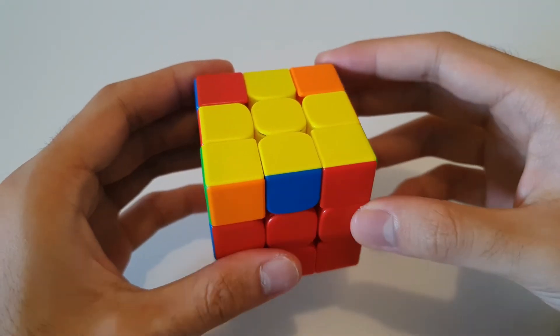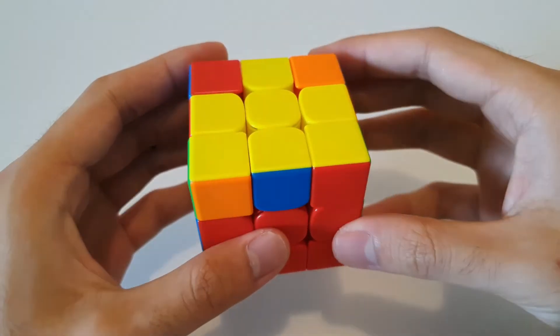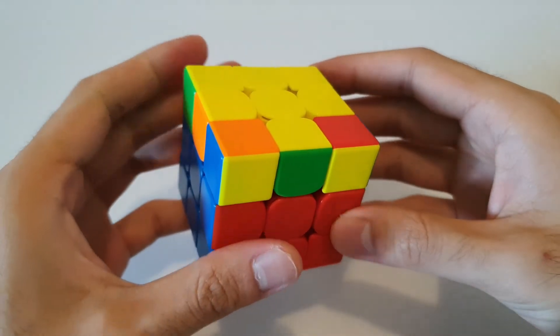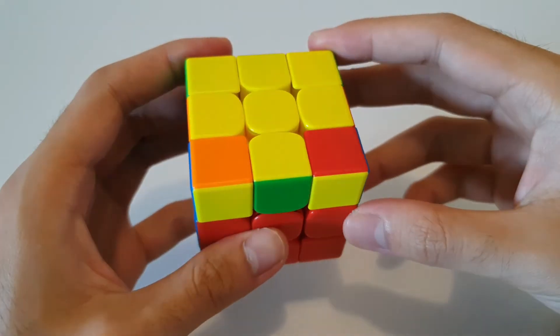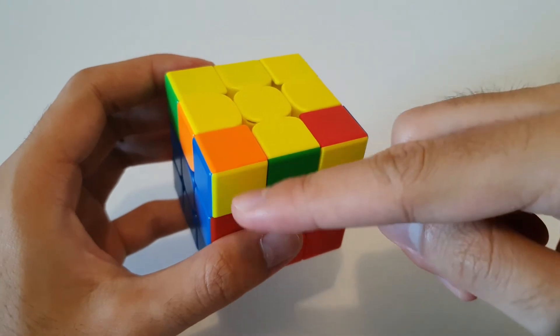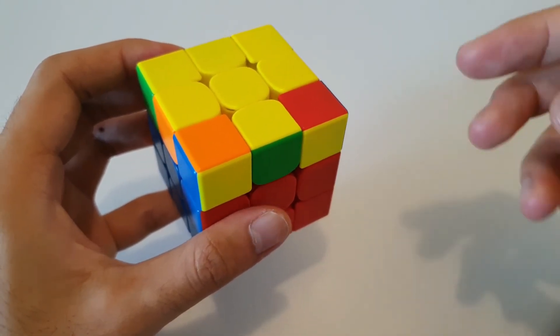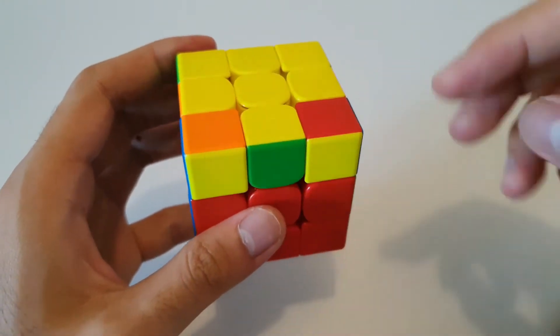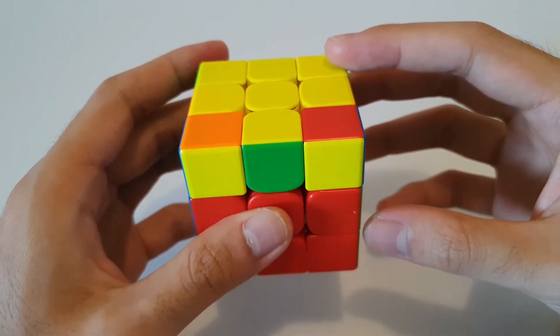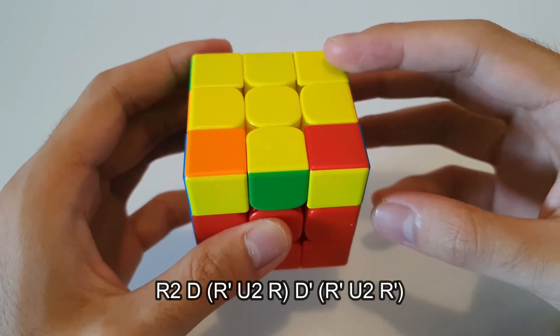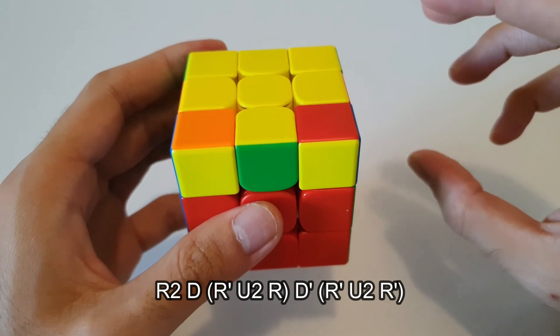So moving back to the case where we have two adjacent corners that are correctly oriented, and notice that this case has the unoriented corners facing the same direction. So this can be thought of as the U shape, because if you extend these yellows downwards, you get sort of a U shape. But anyway, so the algorithm for this case is actually quite a bit more difficult to recognize, so I do recommend following how your hands move rather than just remembering the moves.